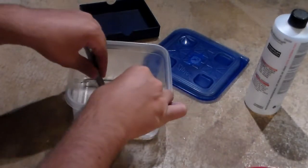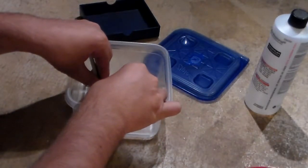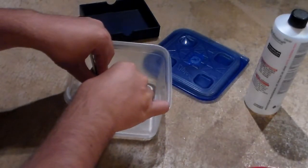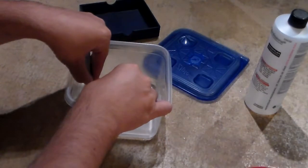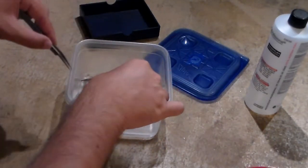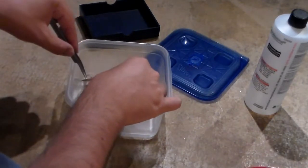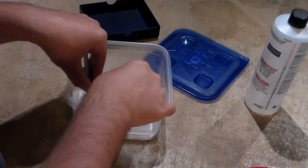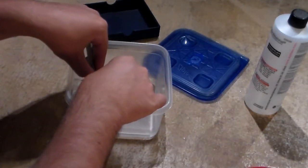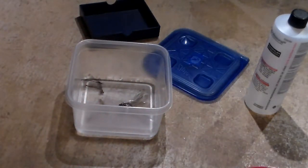So once you get them in the acetone bath, you want to leave them in there for damselflies at least 4 hours, and dragonflies at least 8 hours. But I just do it simple and just keep them in there overnight, and then in the morning I'll continue the process.